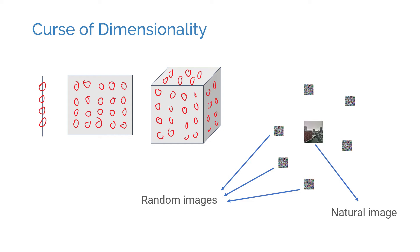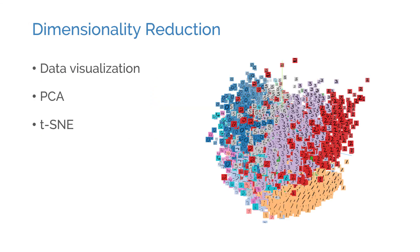In deep learning, dimensionality reduction is usually not done as a separate step, but the models learn compact representations within the model. It's still common to use dimensionality reduction techniques for visualization purposes, though. For example, PCA or TSNE methods can be used to visualize data points with many dimensions in three-dimensional space. Data visualization and traditional dimensionality reduction techniques are a little off-topic for this video, so I won't go into further detail, but you can find more information about them in the description below.